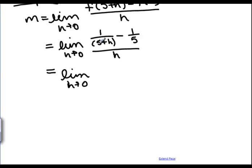So the common denominator between 5 plus h and 5 is just multiplying those two together. So if I want to take 1 over 5 plus h and change the denominator to 5 plus h times 5, I need to multiply top and bottom by 5 plus h in parenthesis.